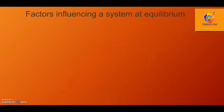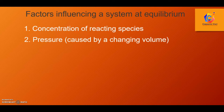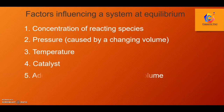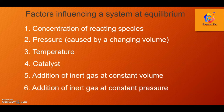What are the factors that influence a system at equilibrium? There are: concentration of reacting species, pressure which is caused by a changing volume, temperature, catalyst, addition of inert gas at constant volume, and finally the addition of inert gas at constant pressure.